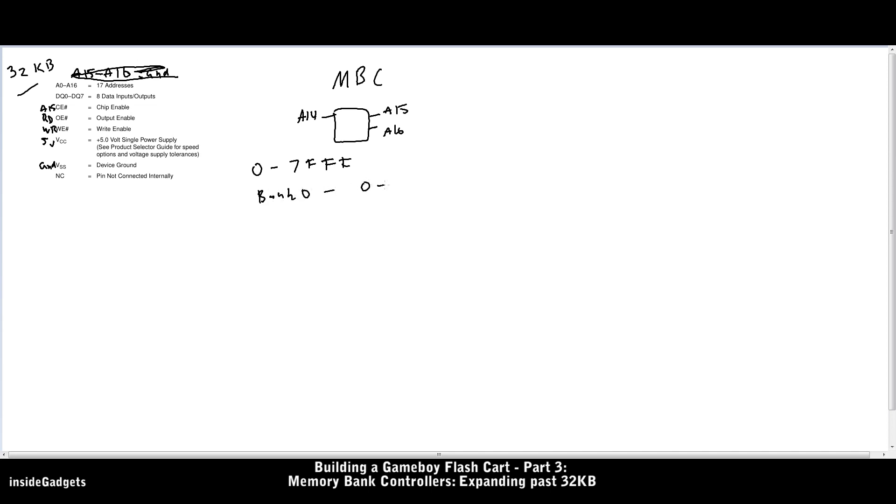Bank 0 is 0 to 3FFF, which is 16 kilobytes, and then we have bank X, which is controlled by the MBC, which is 4000 to 7FFF, which is also 16 kilobytes. With the MBC, you're not able to change bank 0; you're only able to change the second bank.